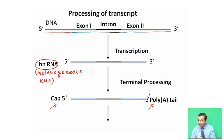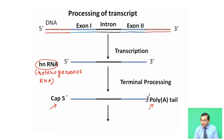Here is a diagrammatic representation of how post-transcriptional modification occurs. In the 5' to 3' direction, one DNA molecule has a single intron and two exons — exon 1 and exon 2. Transcription occurs with RNA polymerase and a primary transcript forms, containing exon 1, exon 2, and one intron. This primary transcript formed after transcription is called heterogeneous RNA (hnRNA).